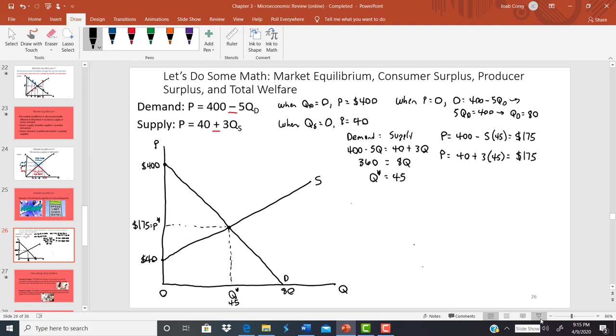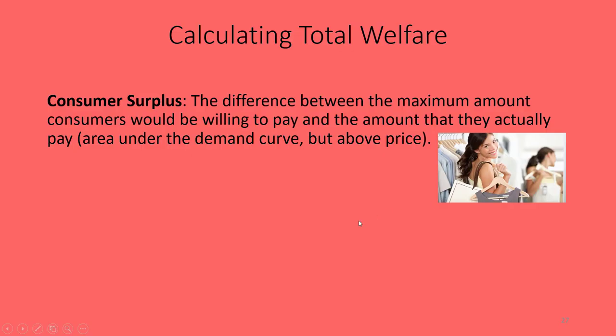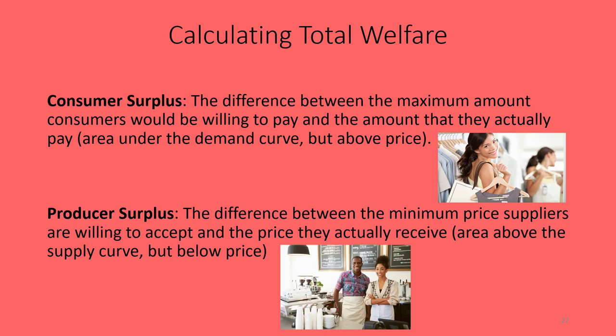Let's talk about some definitions before returning to the graph. Consumer surplus is the difference between the maximum amount a consumer would be willing to pay — essentially the marginal benefit to the buyer — and the amount they actually end up paying, which is the price. Consumer surplus is the area under the demand curve but above price. Producer surplus is the difference between the minimum price a seller is willing to accept — essentially the marginal cost of producing the good — and the price they actually receive. It's the area above the supply curve but below price.